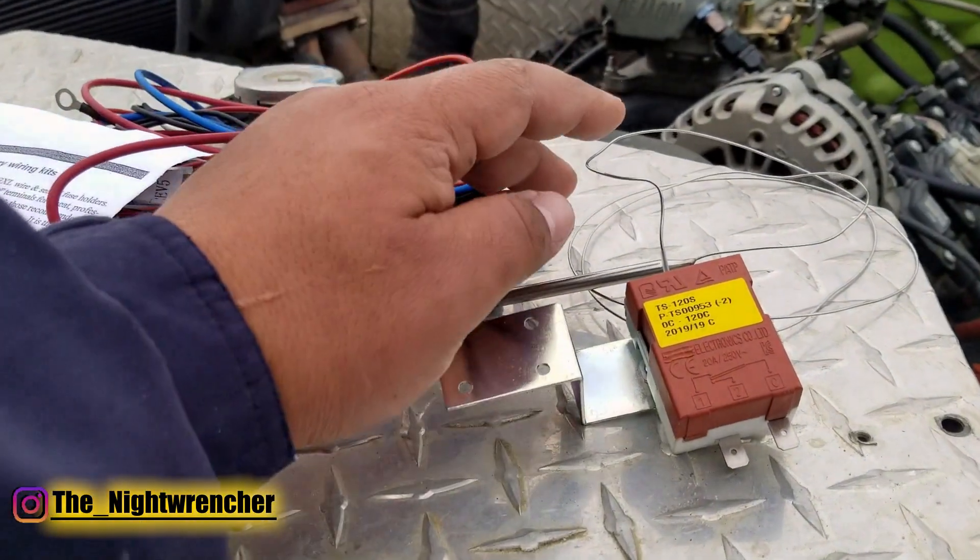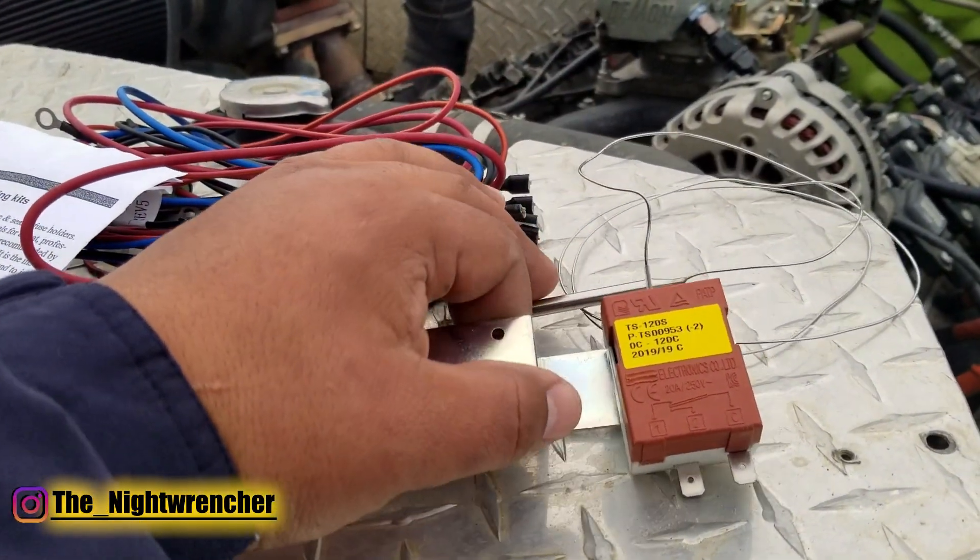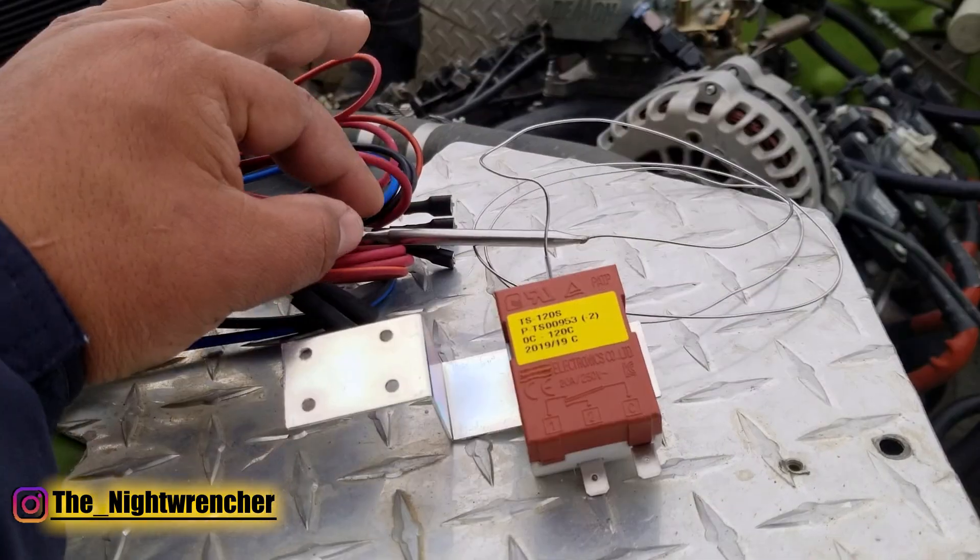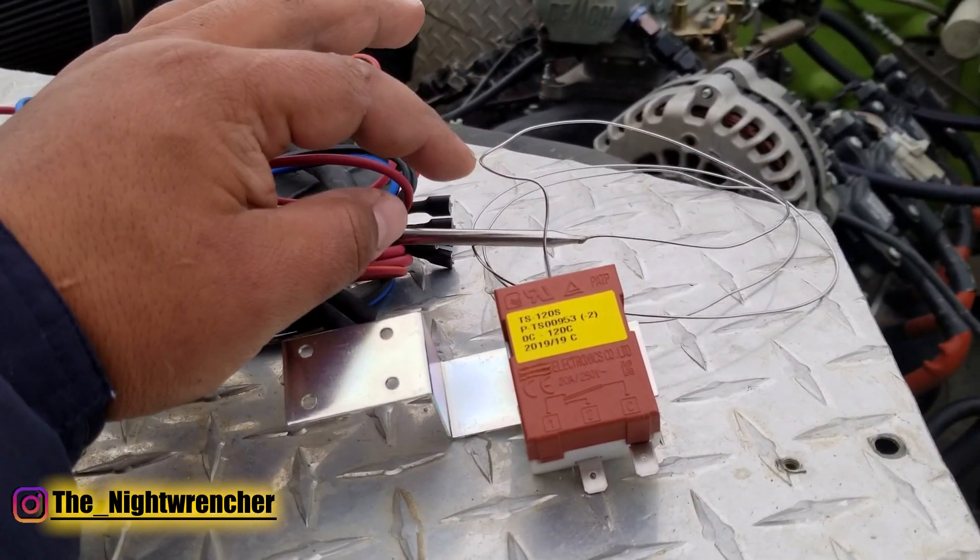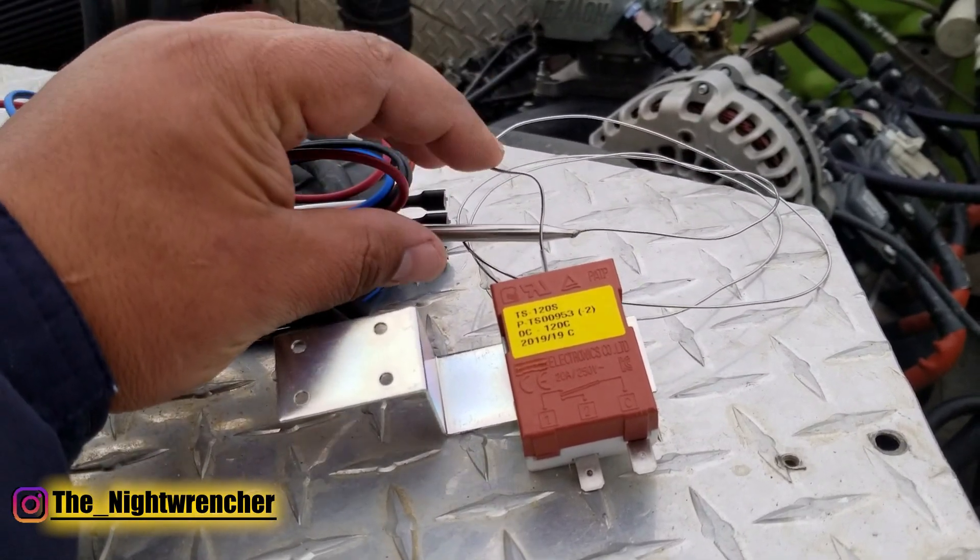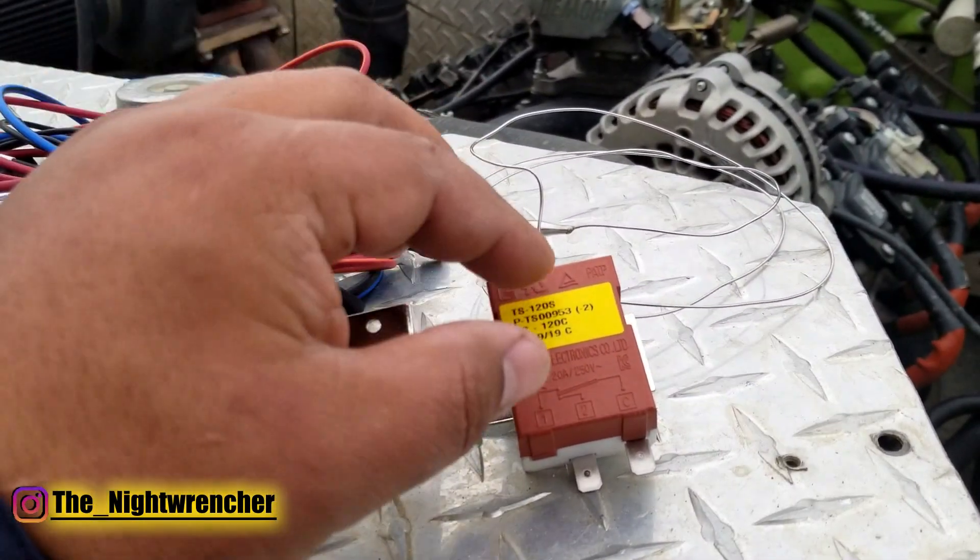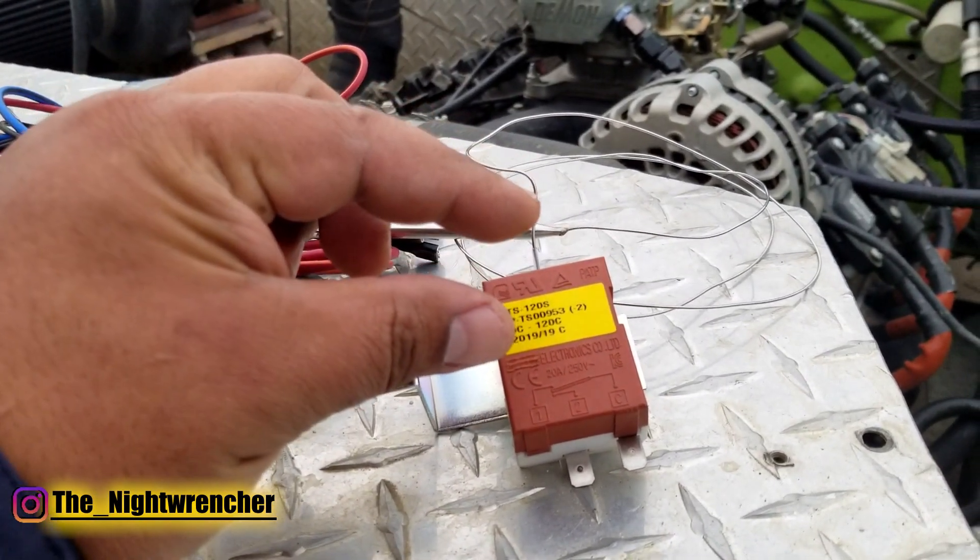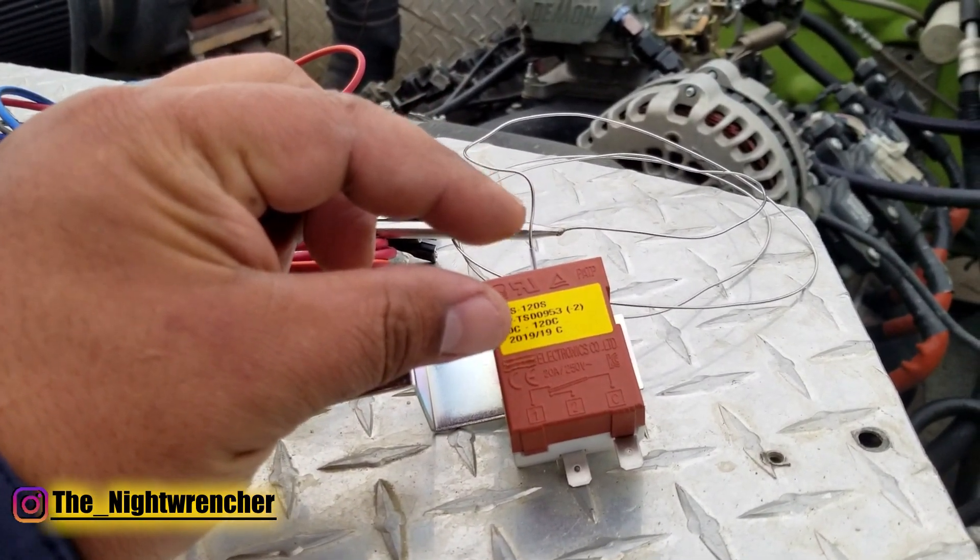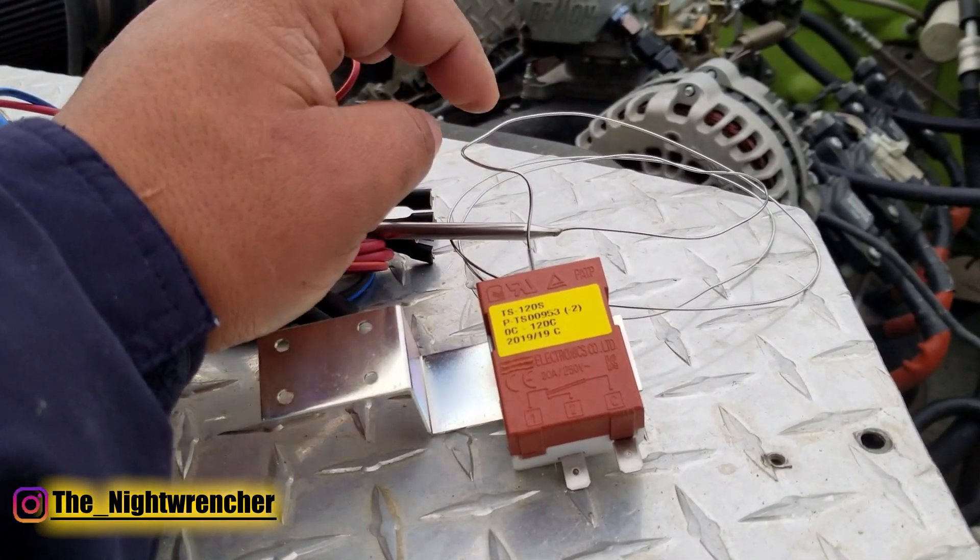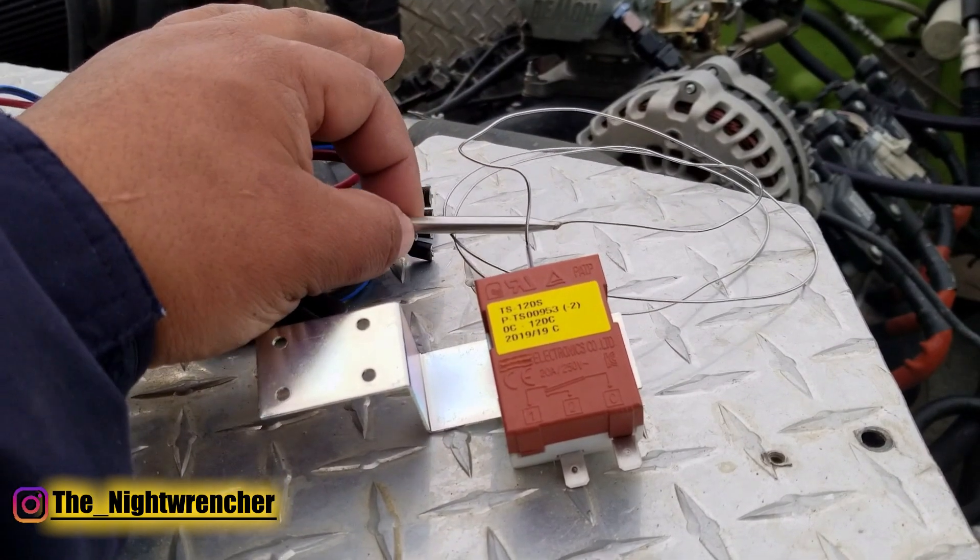We've got ourselves a capillary thermostat switch. How this works is that there's a fluid inside and as heat is applied to the sensing bulb it'll increase the pressure inside the line. Once the pressure exceeds a certain amount it'll trip the internal switch. Once it cools down it'll close the internal switch. If you break this line or kink this line you could render the whole system useless.